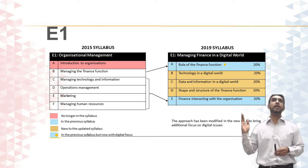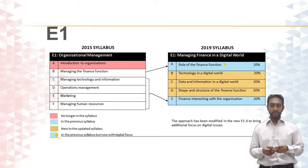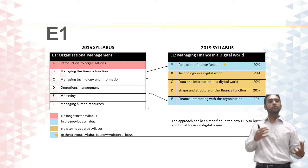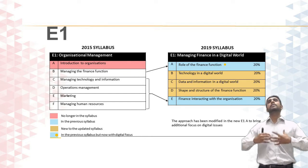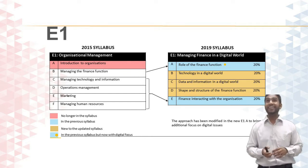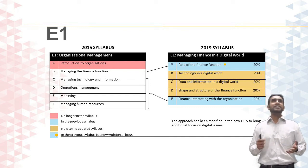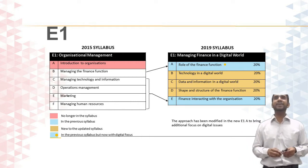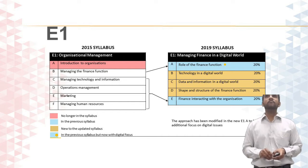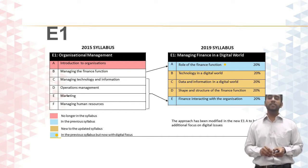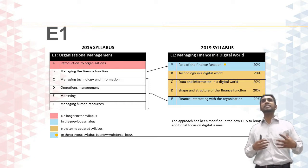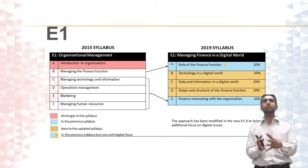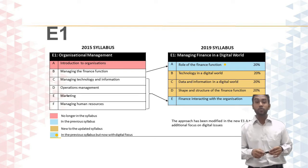Managing the finance function remains in the syllabus but there is a digital spin to it, with focus on how technology and digitalization has had an impact on the finance function. Topics C, D, E and F have all been merged into one topic under the new syllabus: finance interacting with the organization. So the detail previously covered in marketing, managing human resources and operations management is now integrated into one small topic covering about 20% of the syllabus.